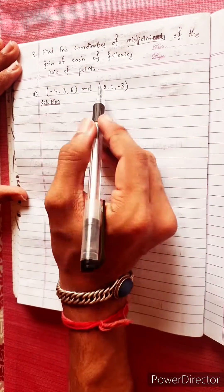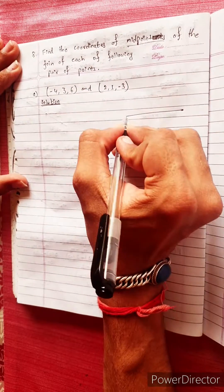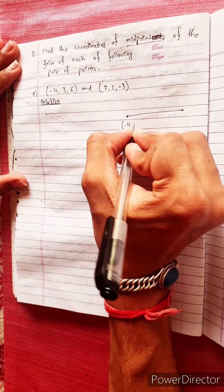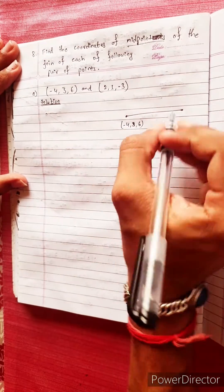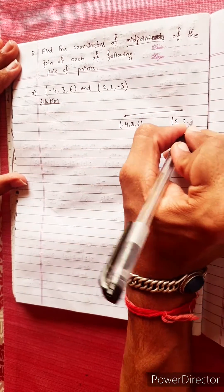Find the coordinates of midpoint. This is between points. Suppose we have a line. The points are minus 4, 3, 6, and the points are 2, 1, minus 3.